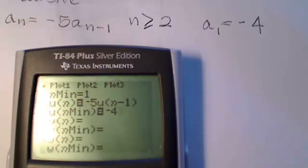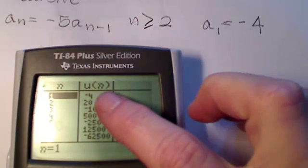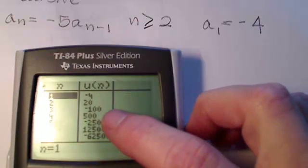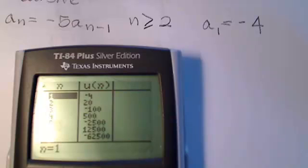Let's take a look at what we get for values. I'll push second table. And there you see there's negative 4, and then I multiply that by negative 5. I get 20, negative 100, and so on. So that is how you do a recursive sequence in the TI-84.